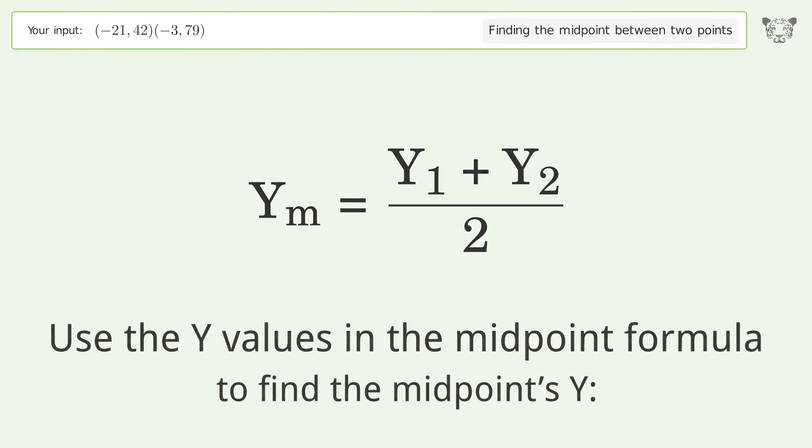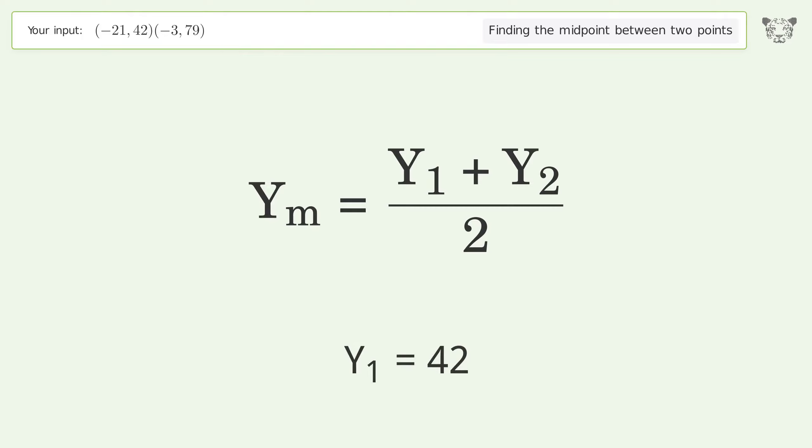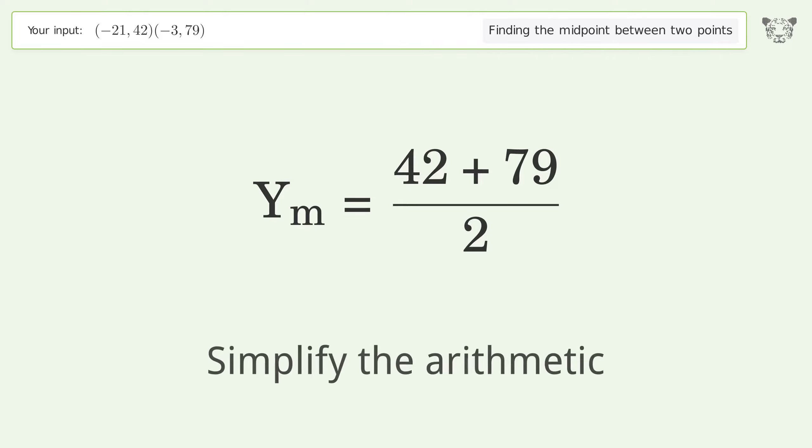Use the y values in the midpoint formula to find the midpoint's y. y1 equals 42, y2 equals 79. Simplify the arithmetic.